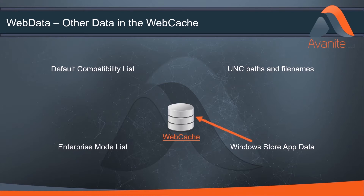Most Windows Store apps communicate to servers on the internet and as such have their own set of web data. This generally means that on a Windows 10 machine, the size of the web cache is twice the size that it would be on a Windows 7 device.